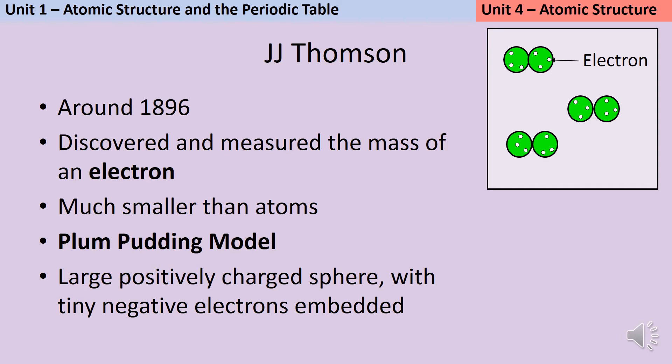He measured that the mass of an electron was about 2,000 times smaller and he knew that electrons were negative, so he developed a new model called the plum pudding model. In the plum pudding model, most of the atom was this large positively charged sphere and then the negative electrons were studded into it.